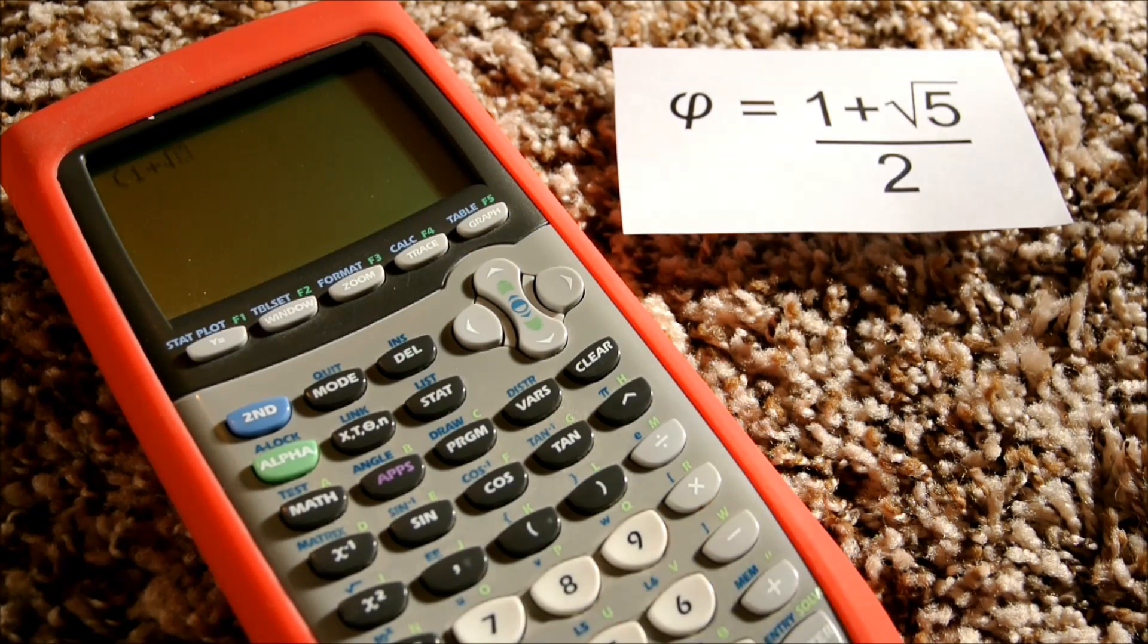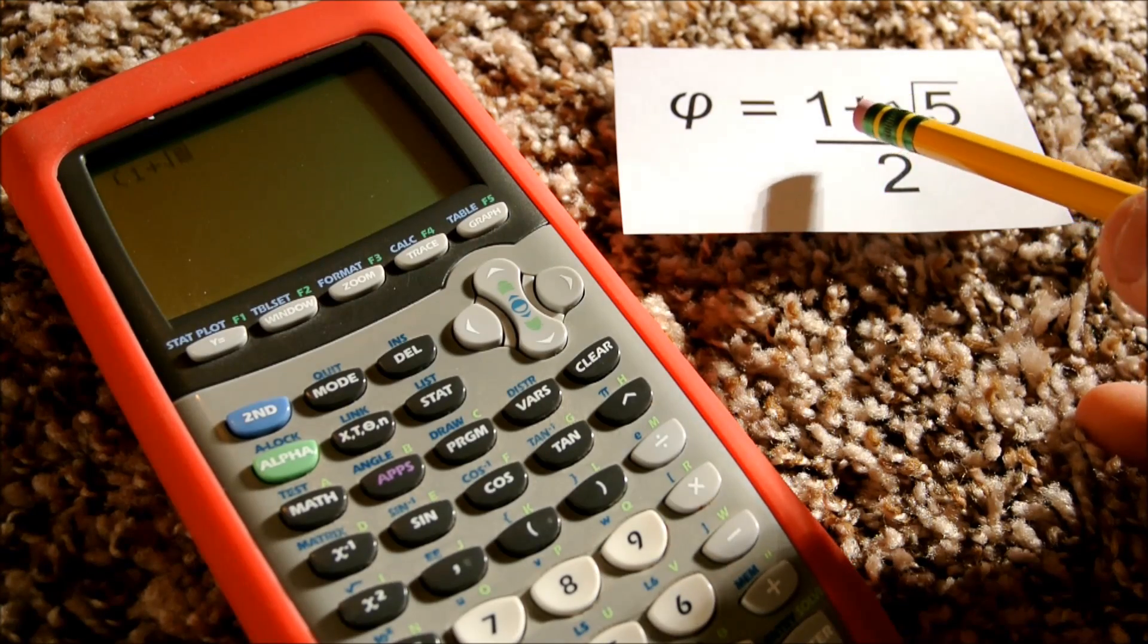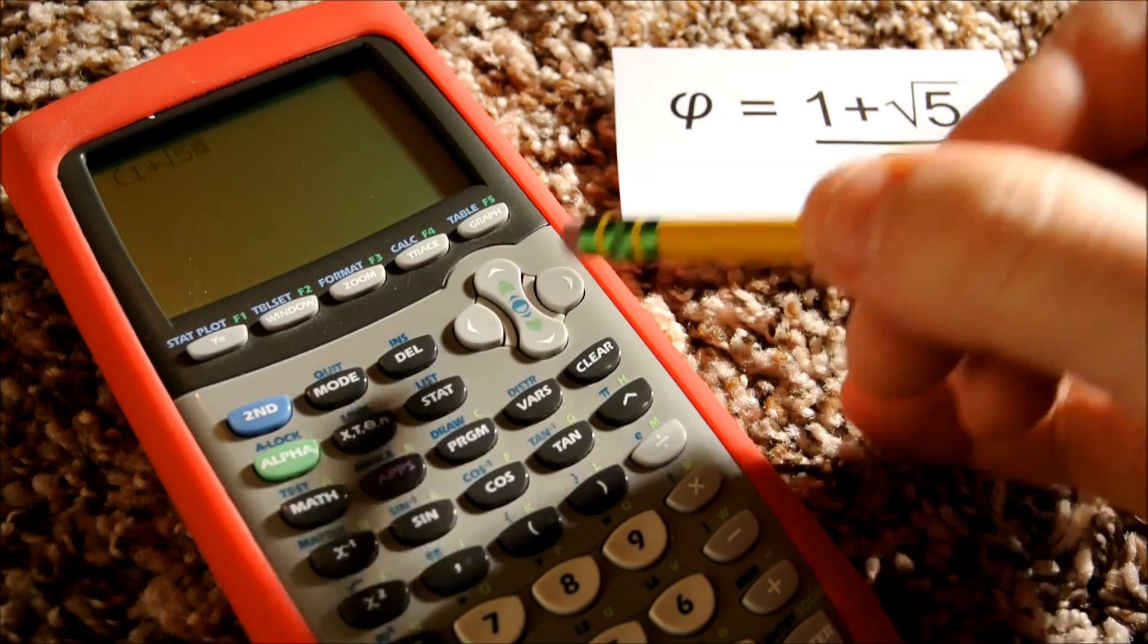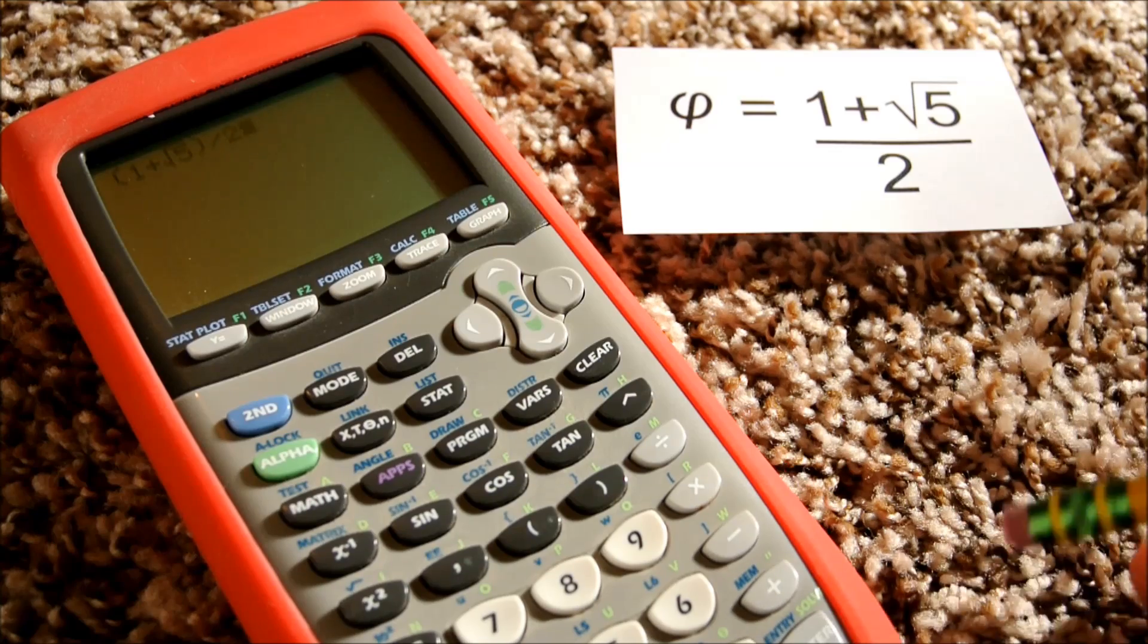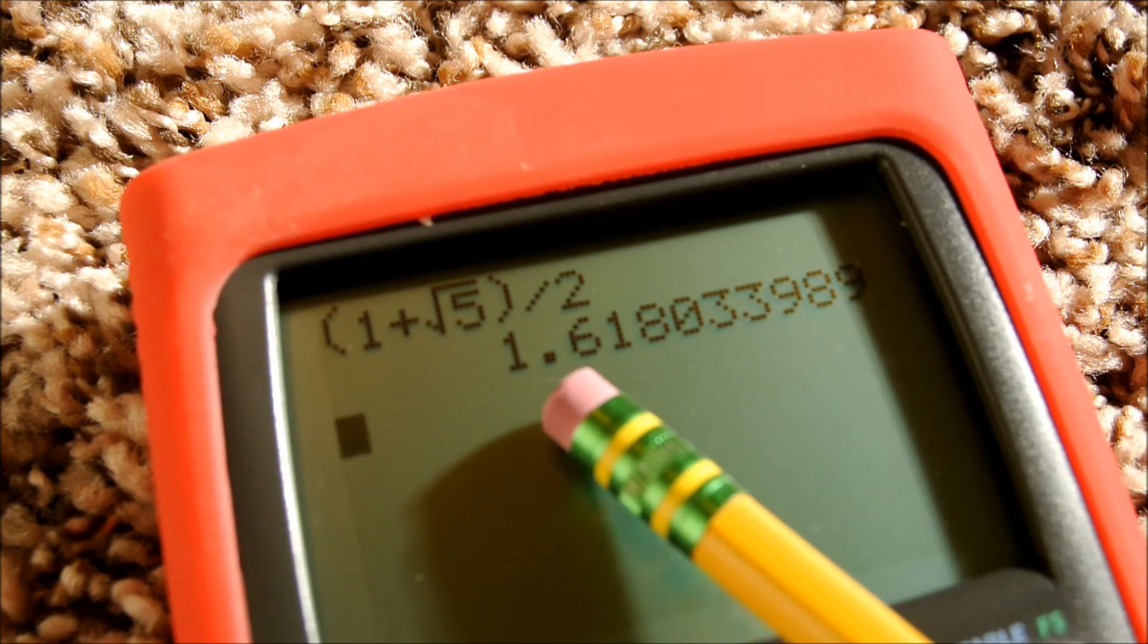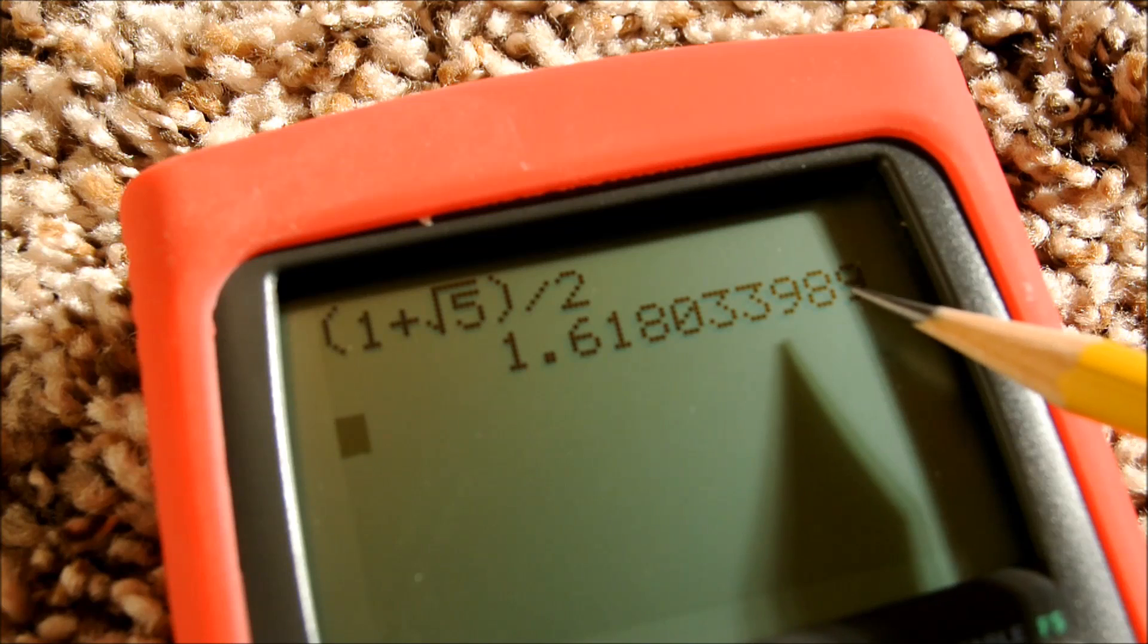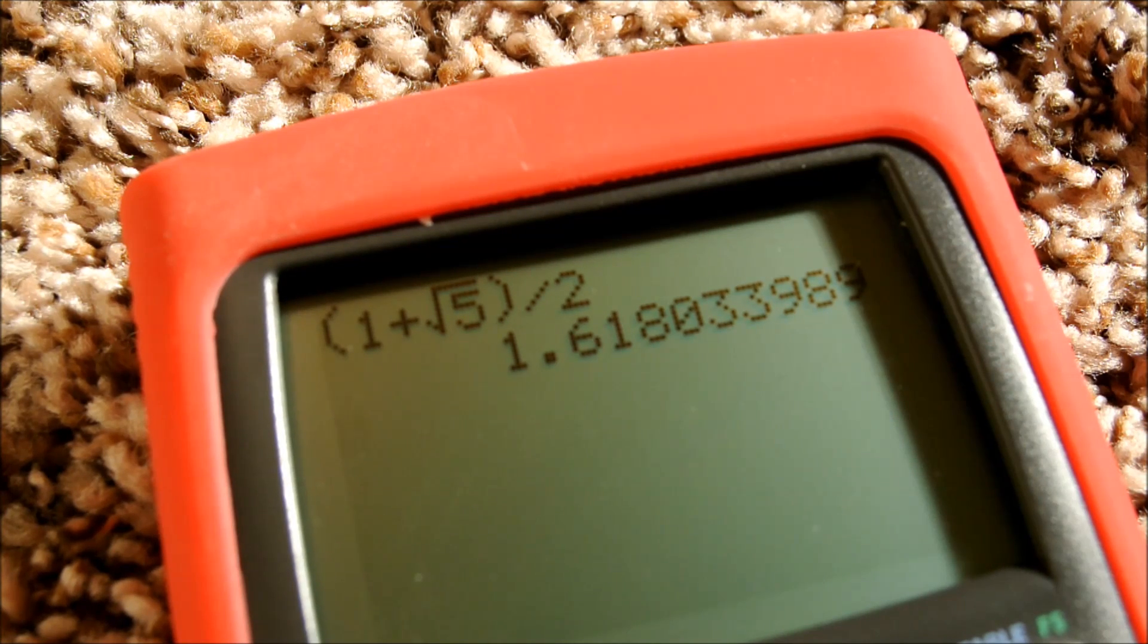So what is this golden number, and how do we find it? It's really easy. It's just 1 plus the square root of 5, and then we take that entire quantity and divide it by 2. But remember, the golden number is actually an irrational number, so this is only an approximation. But I think since we're probably about the size of an atom by this point, that should be close enough for this project.